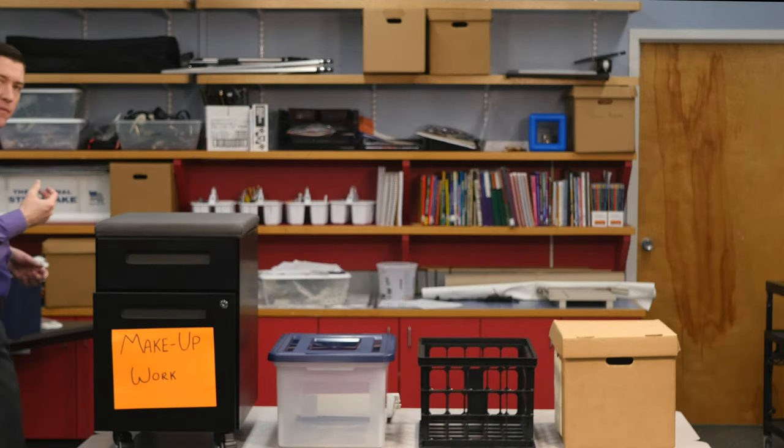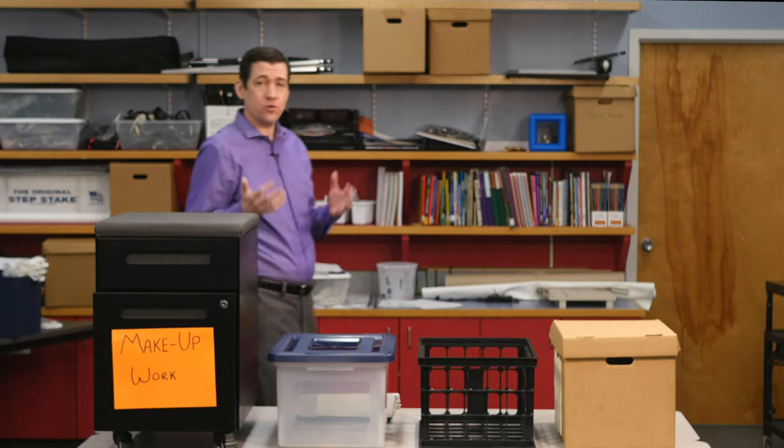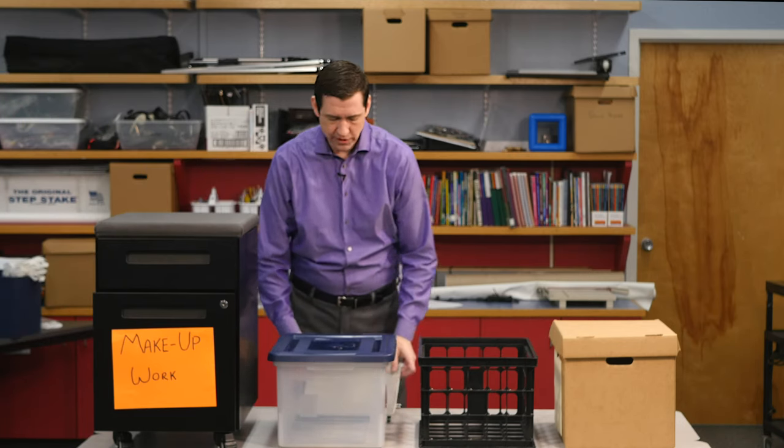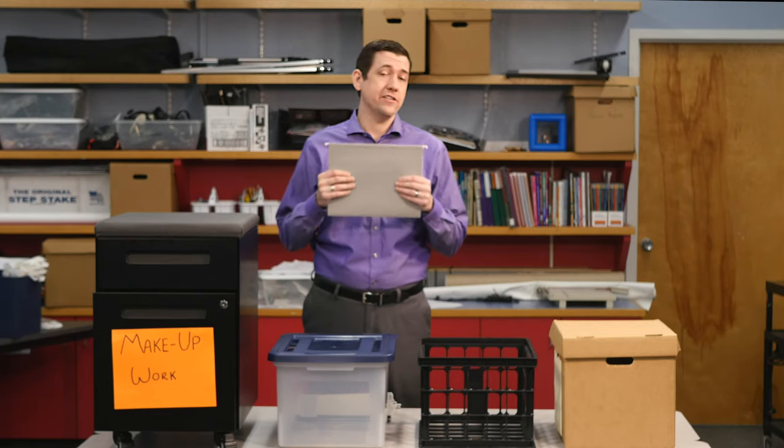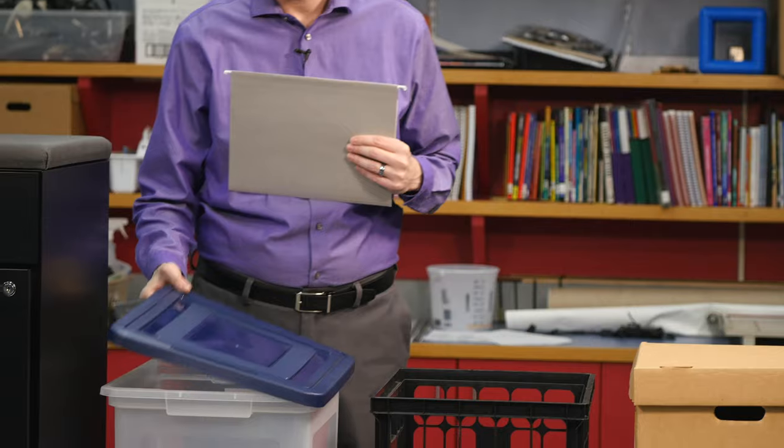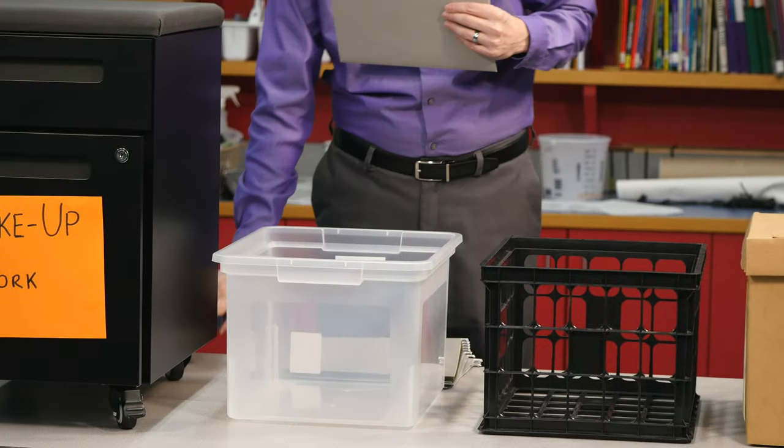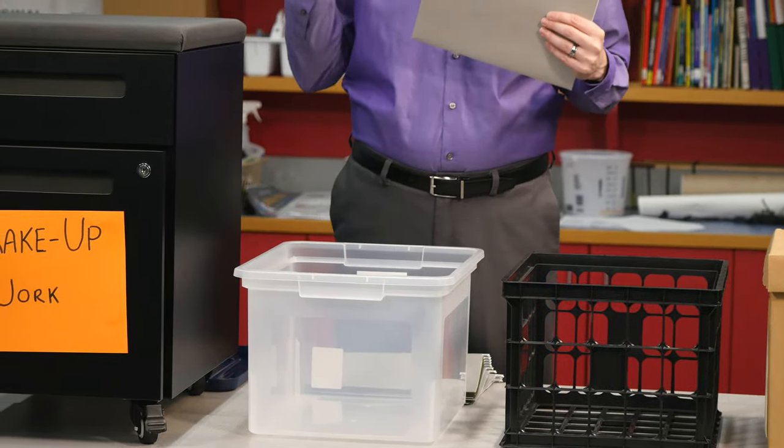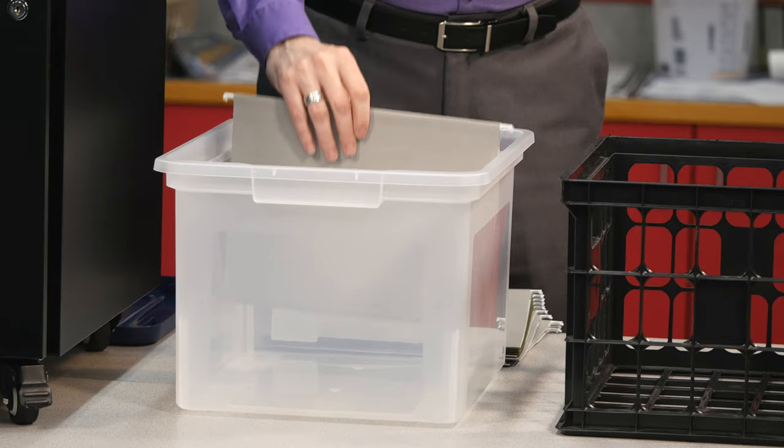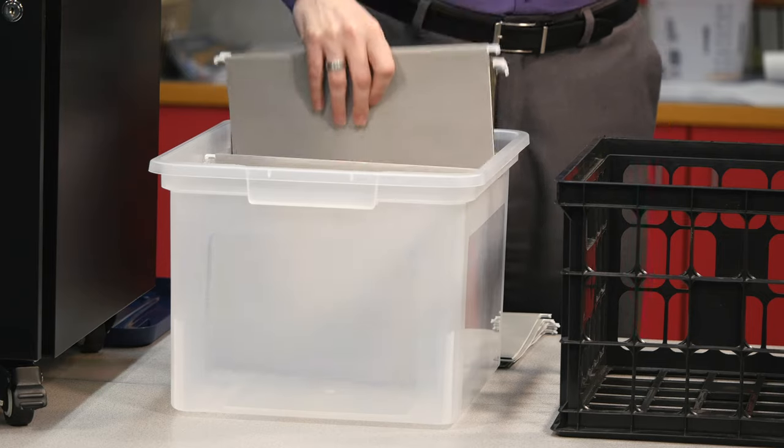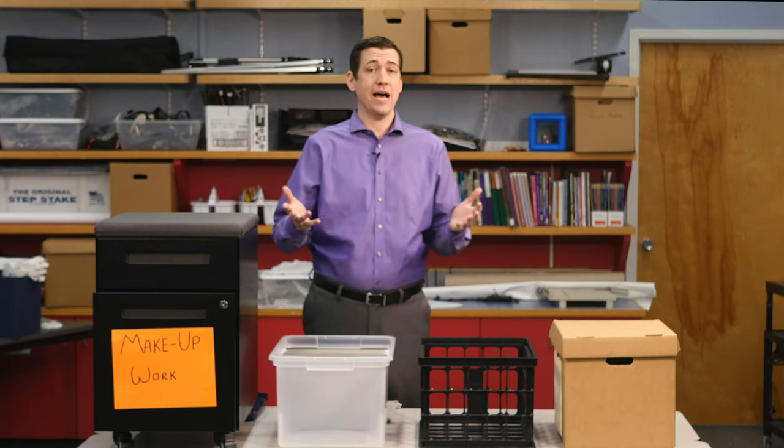But maybe you don't have a filing cabinet. Maybe you need some sort of alternate storage solution. A lot of people don't know this, but the standard size hanging folder will fit a wide range of different containers. One of those is a plastic container like we have here that you can find at big box stores or office stores. They fit right into there, no problem, just like you're using your regular filing cabinet.